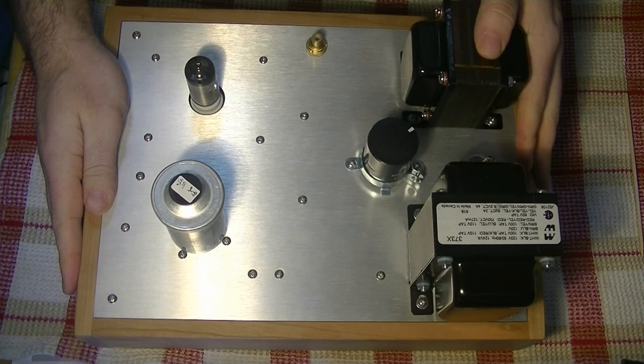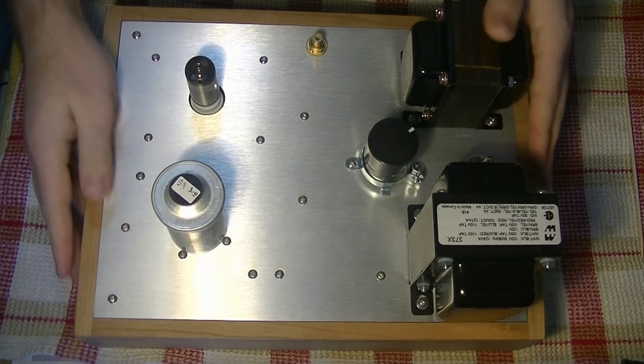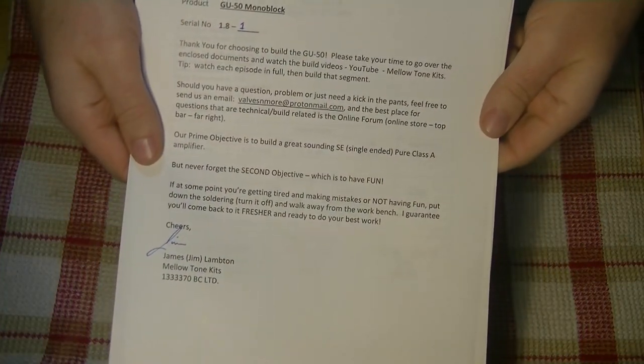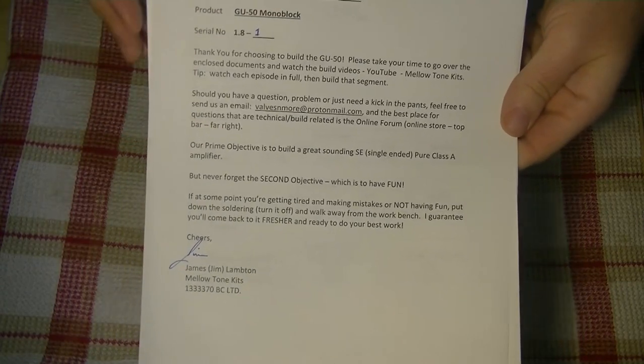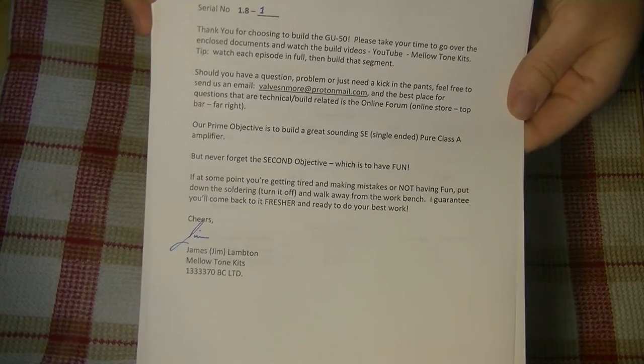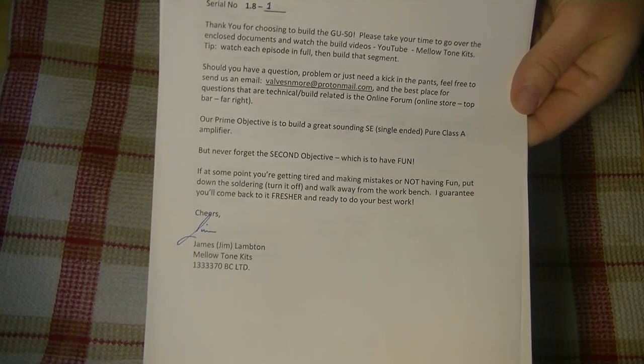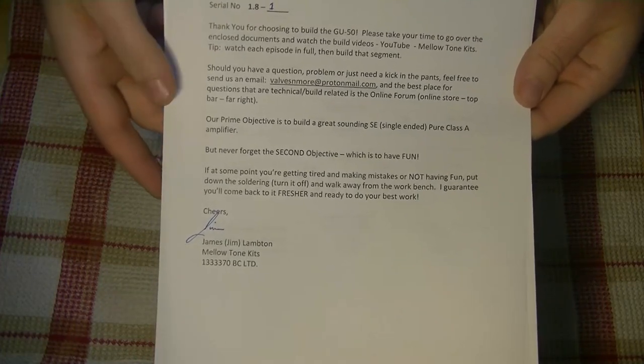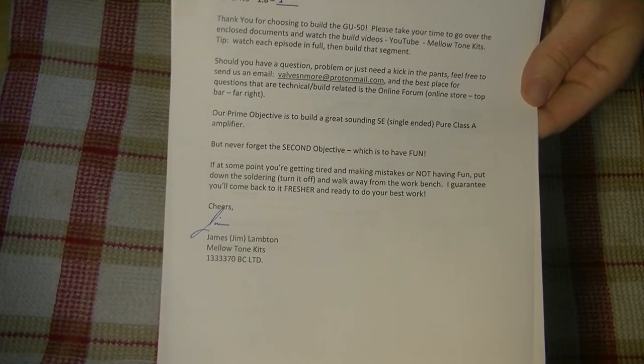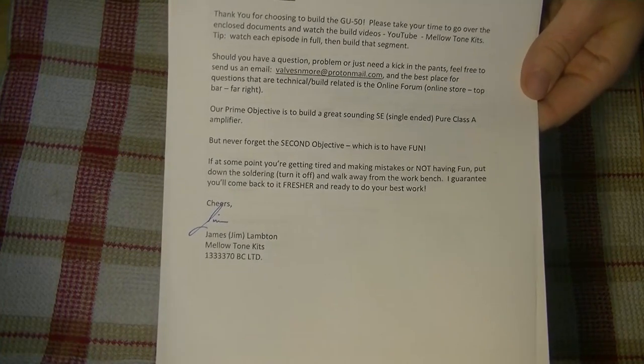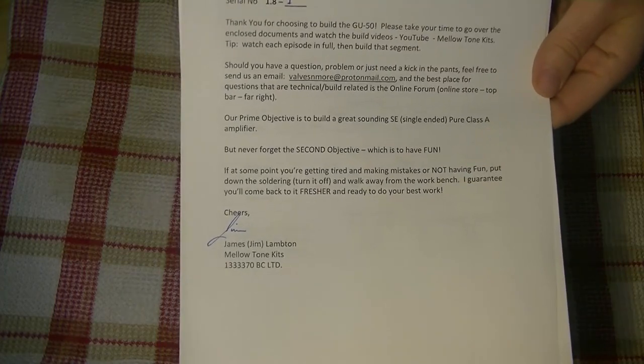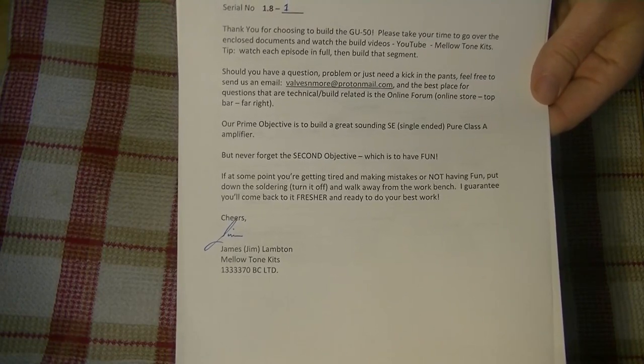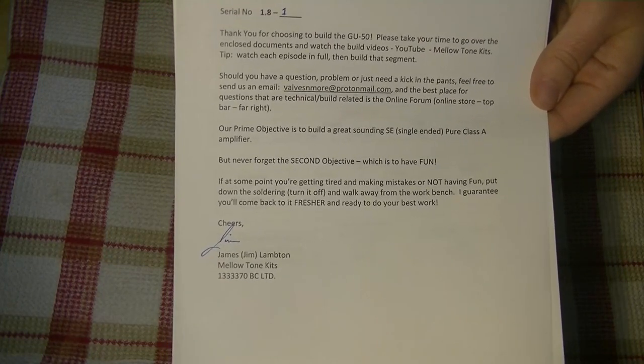Let's move on to the schematics and the information sheet. In your package you should have a yellow folder that contains all the build documentation. Let's take a quick look at it. First, we have this lovely letter with your kit's serial number and some basic advice. I'm not going to read all of it to you, but we'll give you a quick summary. First, we recommend that you watch each build video before building that section of the amplifier. Next, we recommend that if you are tired or distracted, you should pause the build and come back to it when you're fresher and more focused. Be prepared to take your time and do it right.